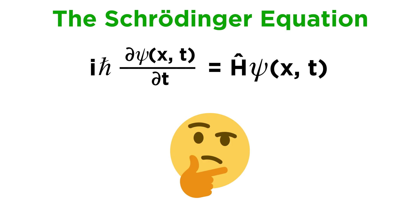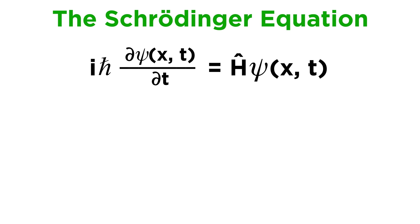In one of the first tutorials in this modern physics series, we displayed the Schrödinger equation in roughly the following form, although we barely discussed it at all, since we were not equipped to do so. Now we can read this properly as i times h-bar times the partial derivative of ψ(x,t) with respect to time, being equal to the Hamiltonian operator acting on ψ(x,t).